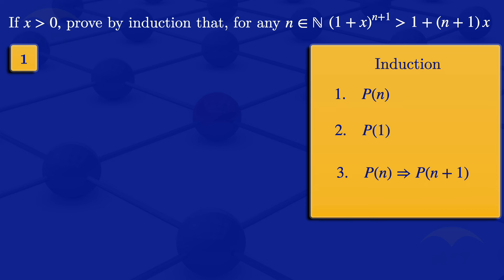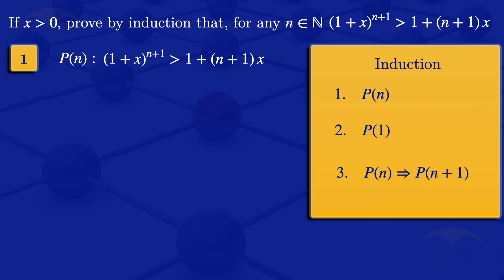What we want to prove is: if x is greater than 0, then 1 plus x to the power n plus 1 is greater than 1 plus n plus 1 multiplied by x. With that, I can tick that I've stated the inductive hypothesis.